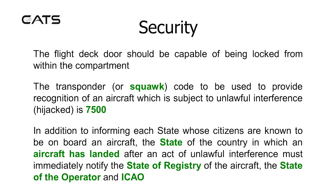In addition to informing each state whose citizens are known to be on board an aircraft, the state of the country in which an aircraft has landed after an act of unlawful interference must immediately notify the state of registry of the aircraft, the state of the operator, and ICAO.